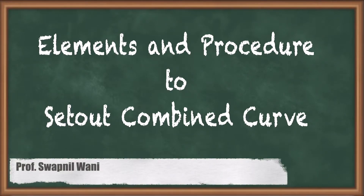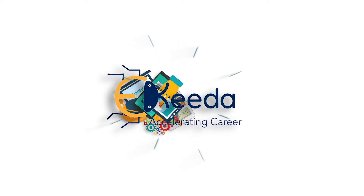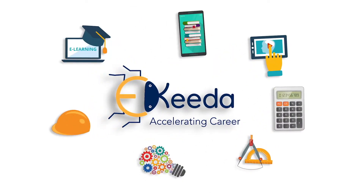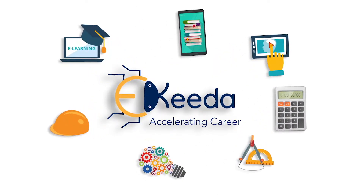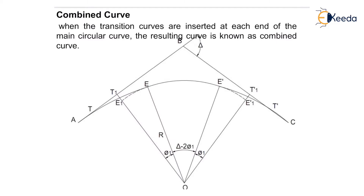Hello friends. In this video we will be discussing about elements and procedure to set out combined curve. When the transition curves are inserted at each end of the main circular curve, the resulting curve is known as combined curve or composite curve.